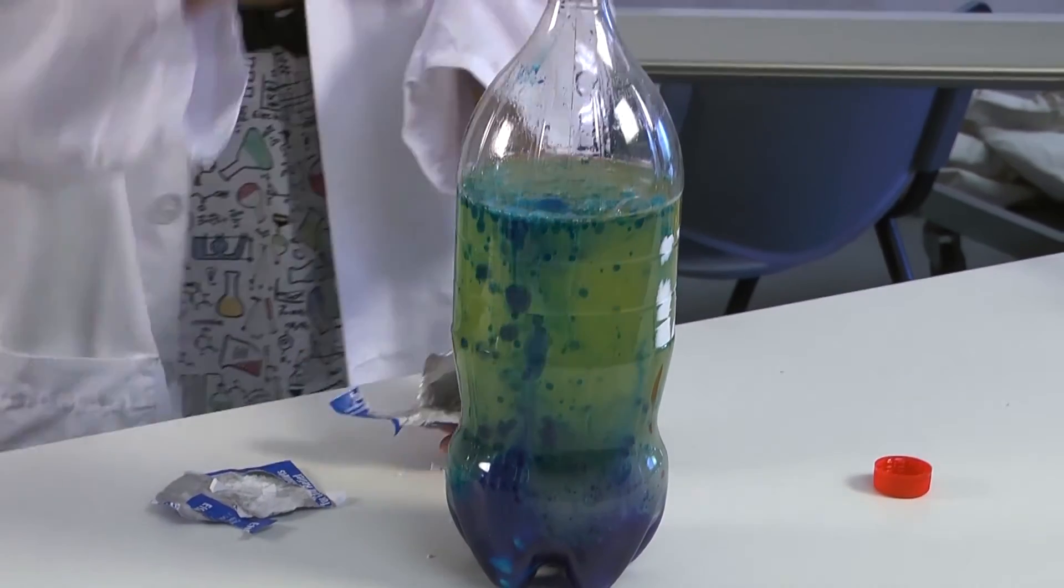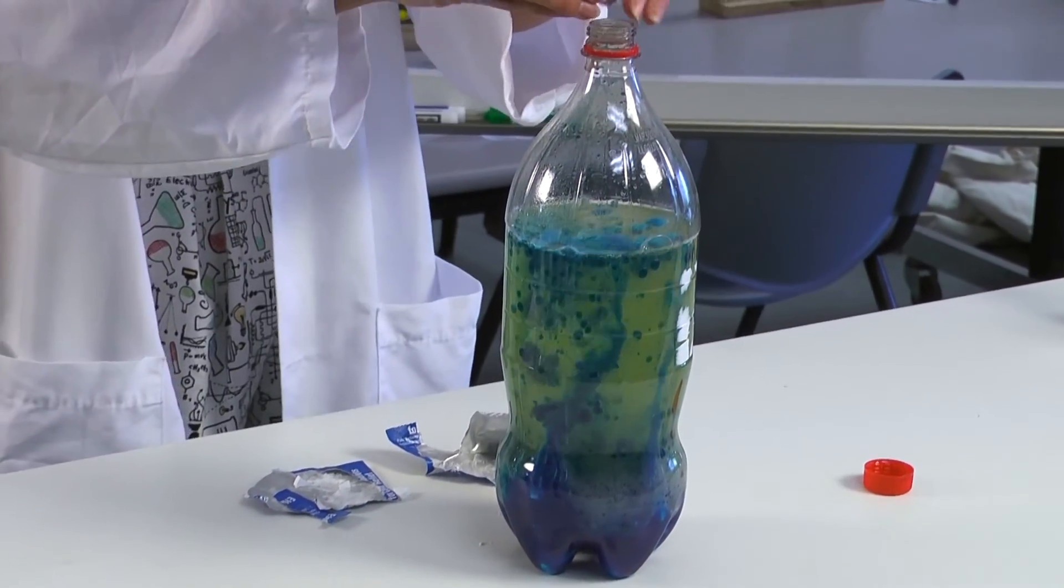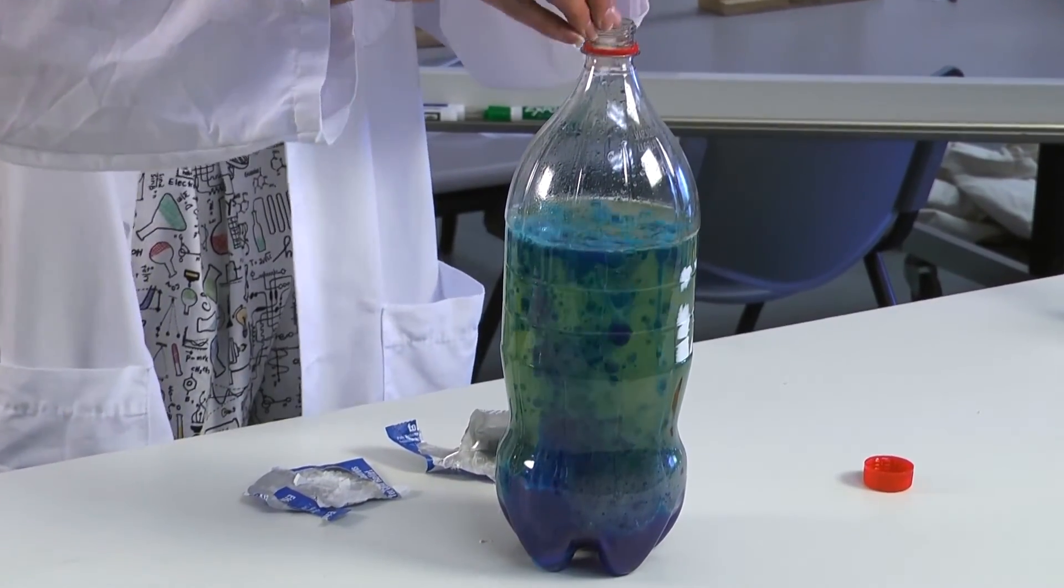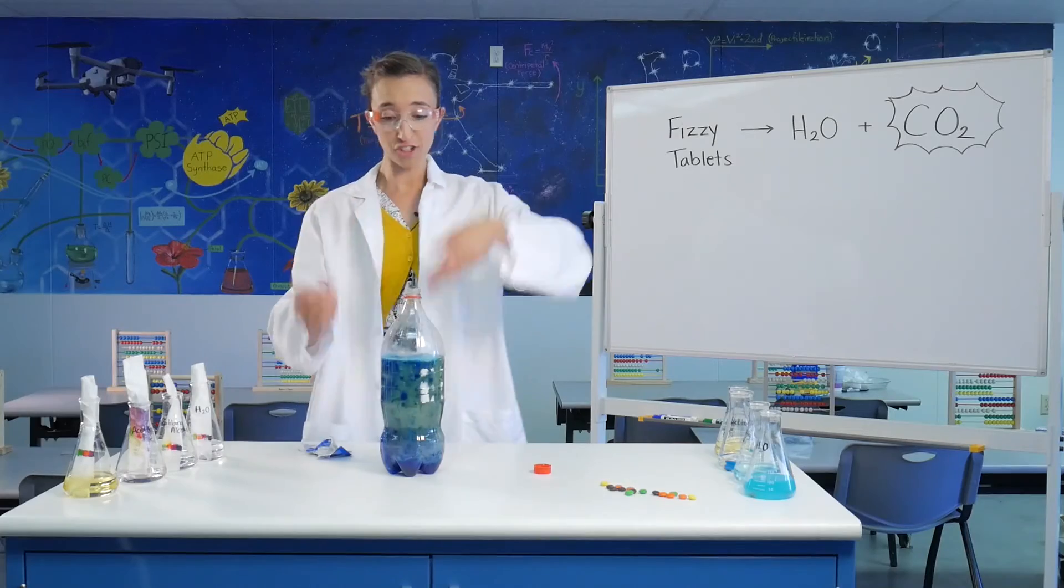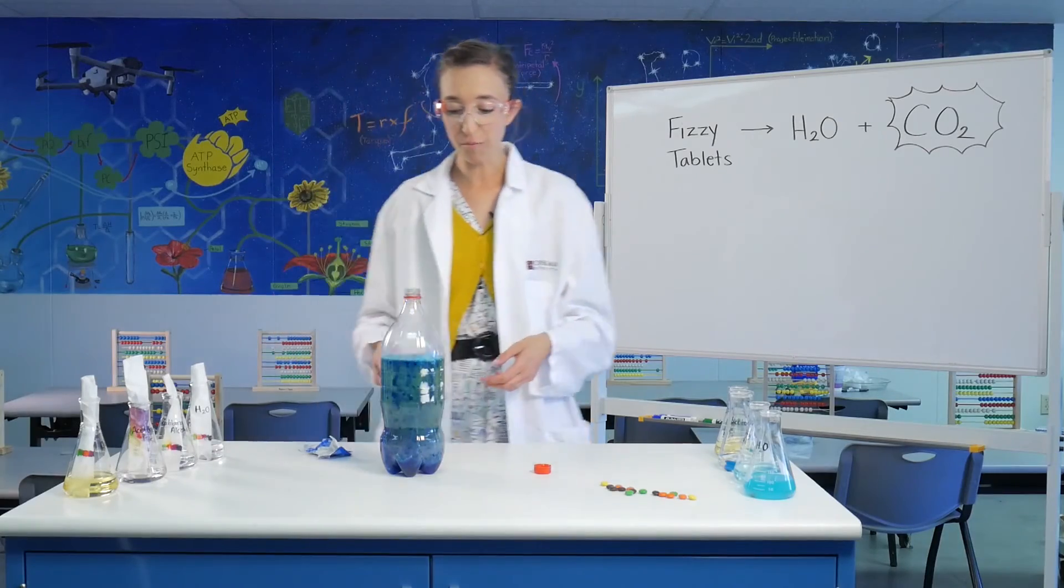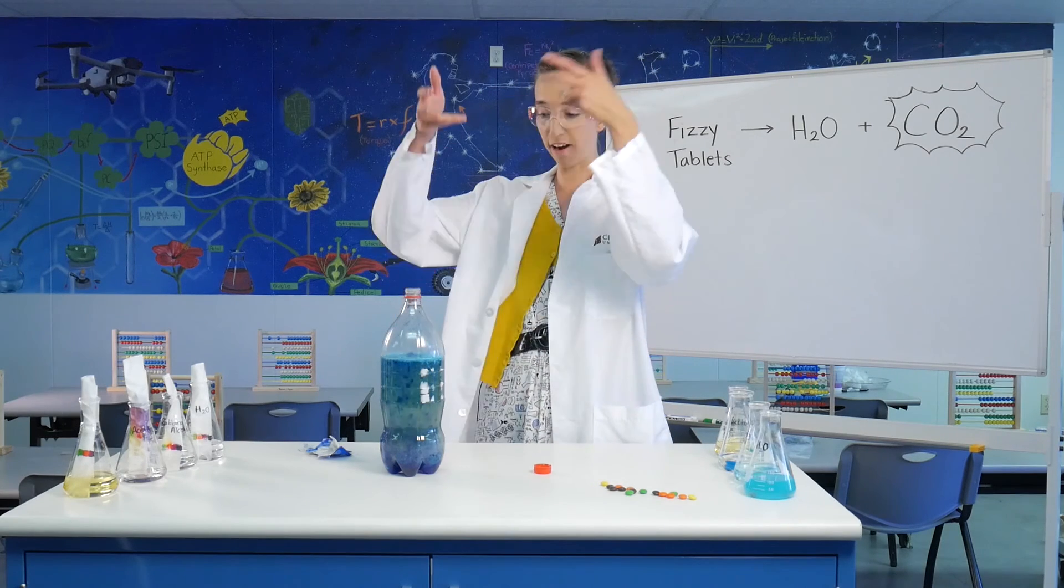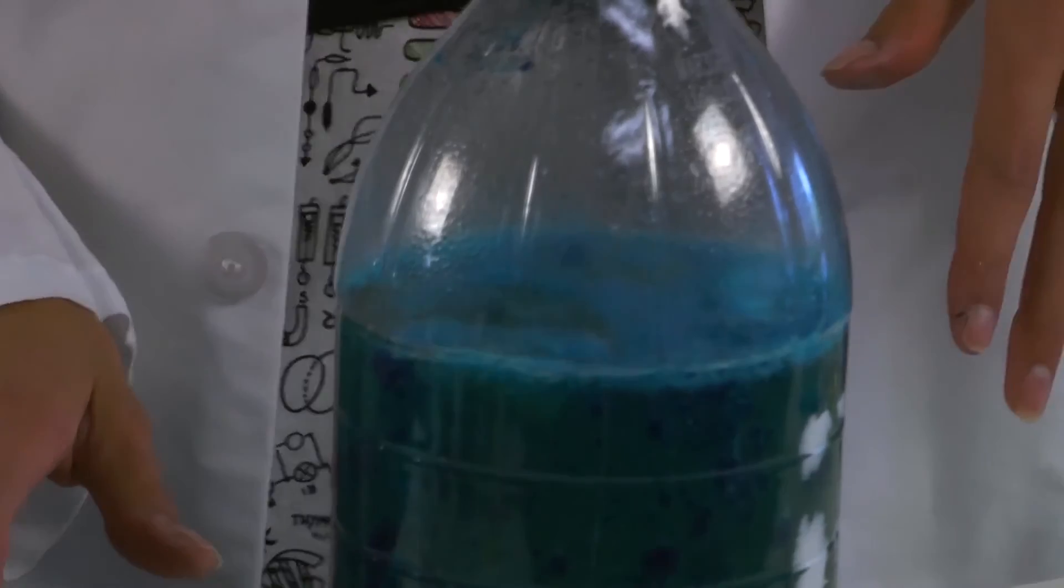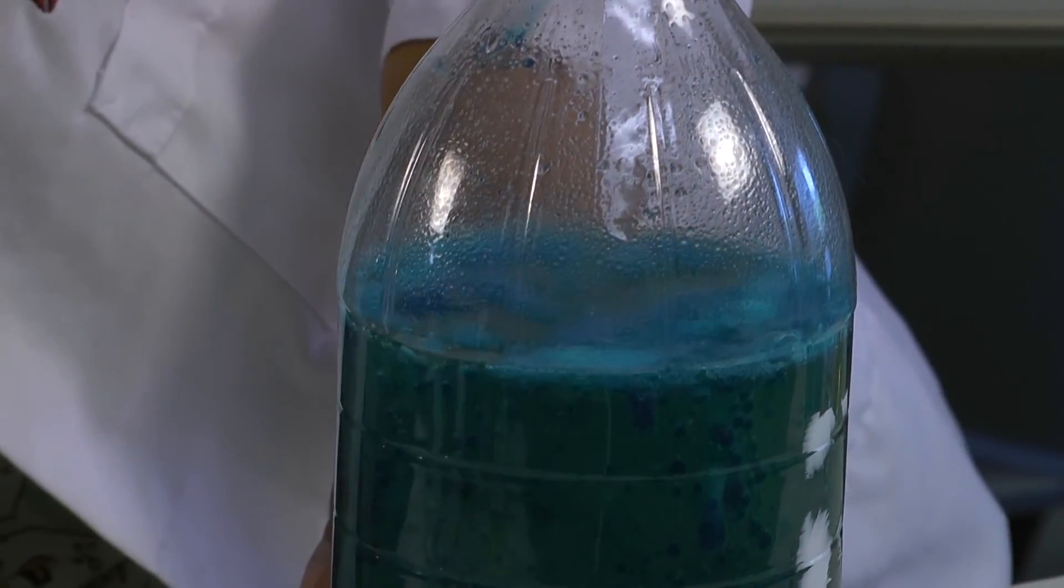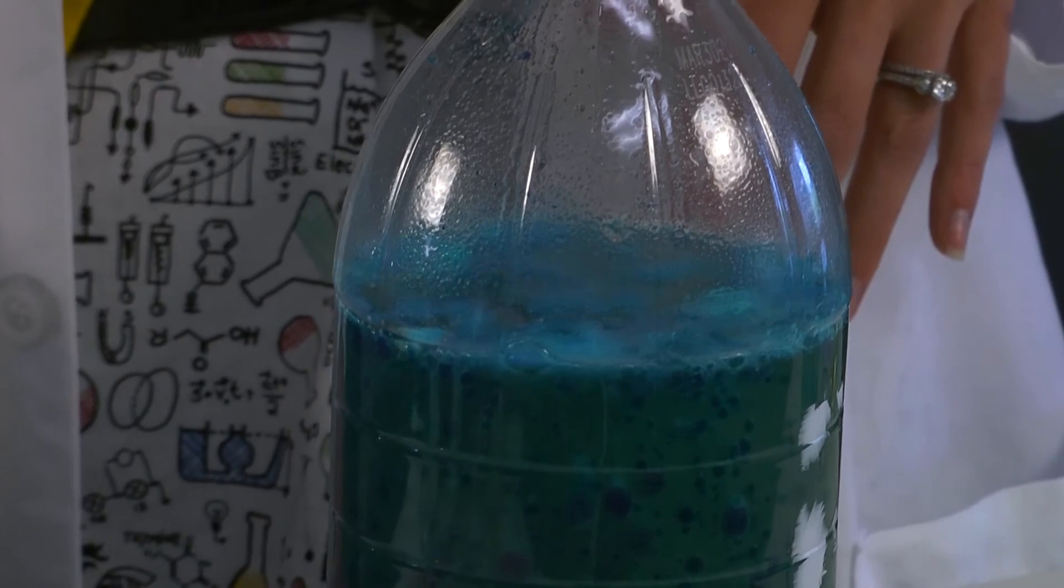Now what's happening here is the oil and water definitely don't want to mix. But the production of carbon dioxide is trying to get out of my flask. And so it's pushing the water up so it can escape. But then the water is settling right back down. And it creates a beautiful, cool, greenish blue lava lamp.